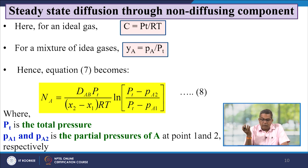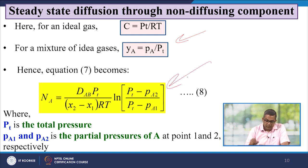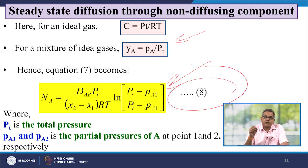For a non-diffusing component for an ideal gas, C equals PT over RT. For a mixture of ideal gas, yA equals pA over PT. Therefore equation 7 can be represented as equation number 8: NA equals (DAB·PT/(x2−x1)·RT)·ln[(PT − pA2)/(PT − pA1)], where PT is the total pressure and pA1 and pA2 are the partial pressures of A at points 1 and 2.